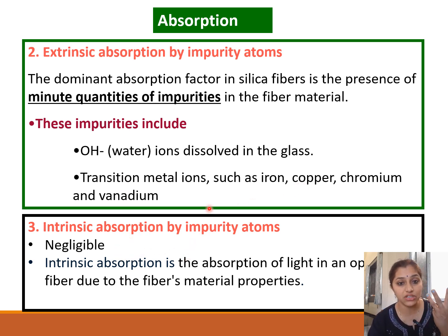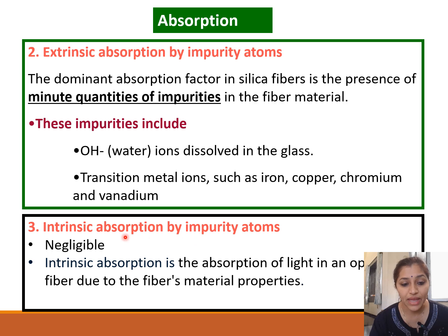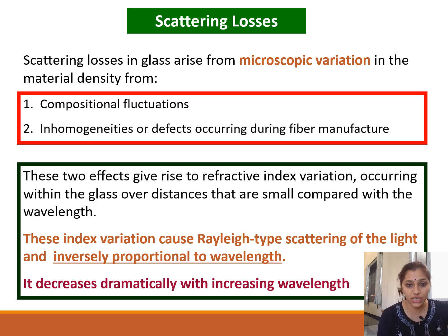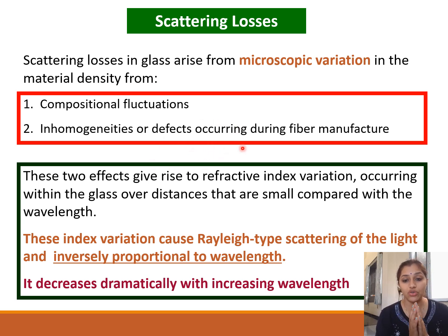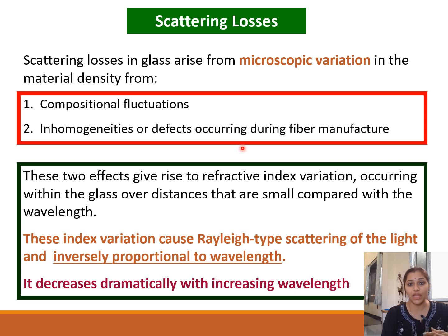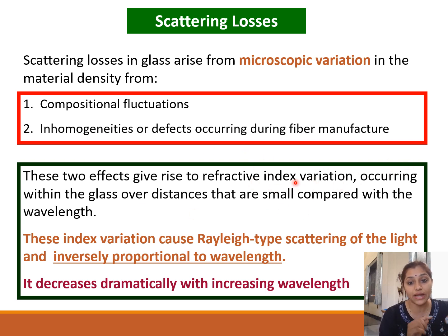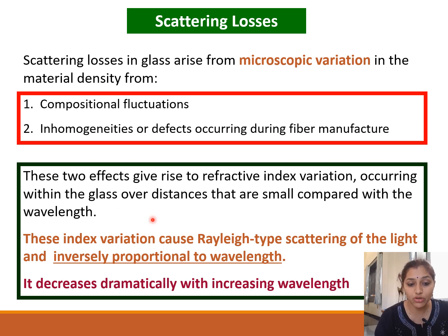The three sources of absorption are atomic defects, extrinsic absorption, and intrinsic absorption. Intrinsic absorption is negligible and is due to the fiber material properties. After absorption, the next source of attenuation is scattering losses. Scattering losses occur because of compositional fluctuations, inhomogeneities, or defects during fiber manufacturing. Because of these compositional fluctuations, the refractive index varies, and instead of following a single path via total internal reflection, the light ray may take multiple paths — causing scattering.